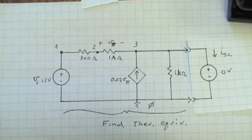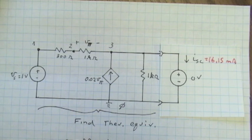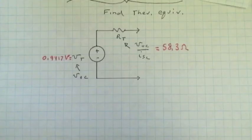So let me use a zero volt voltage source and find the current through that source using SPICE. And that SPICE result is 16.15 milliamps. That is the information we needed to complete the Thevenin equivalent circuit. The ratio of the open circuit to I short circuit is 58.3 ohms. So the Thevenin voltage source is 0.9417 volts. The Thevenin resistance is 58.3 ohms.